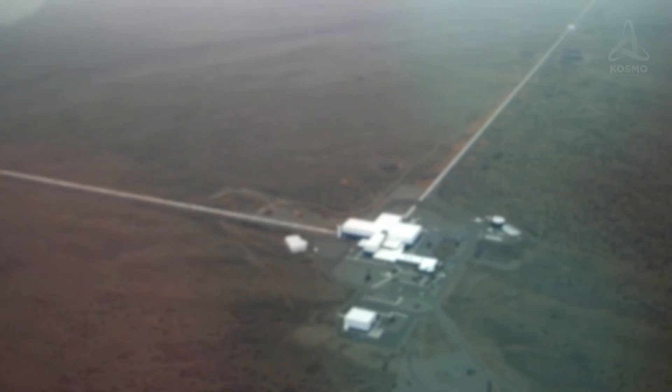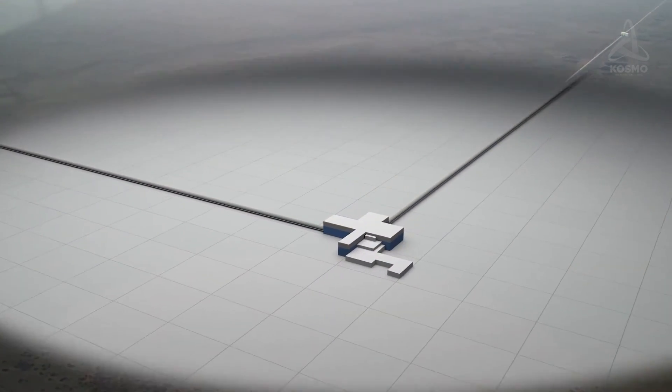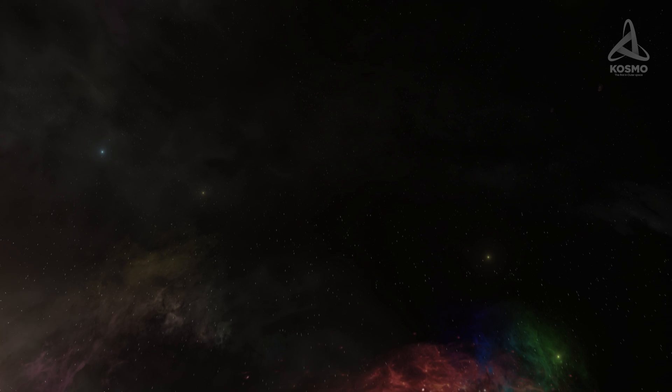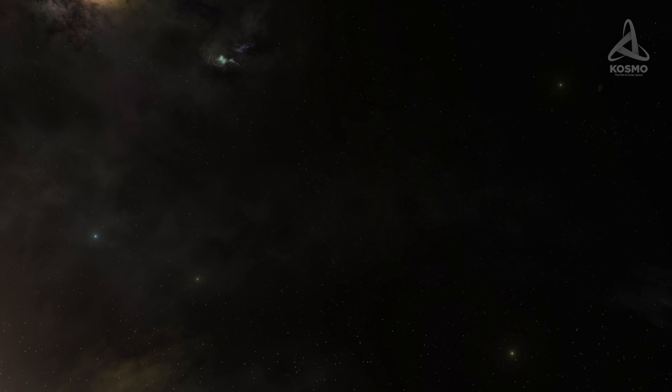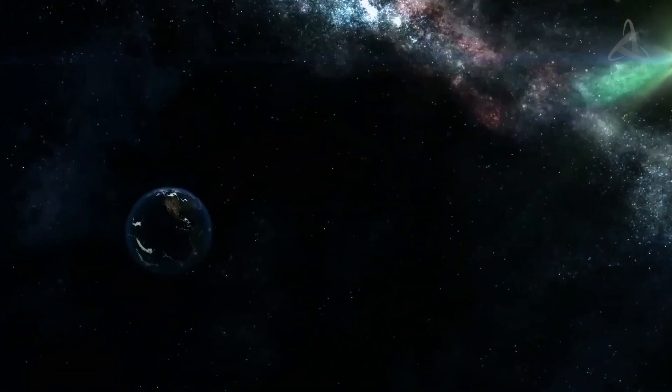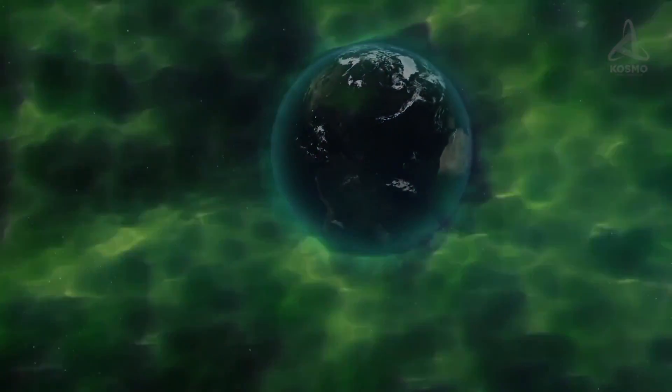This disturbance was registered by the LIGO Observatory detectors. It had taken the wave 7 billion years to reach our Earth, and it lasted just one-tenth of a second. However, this extremely short wave provided no shortage of valuable information about the Universe around us.